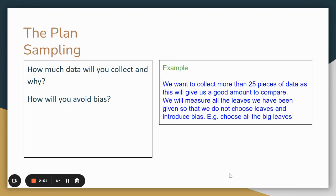We're going to measure all of the leaves that we've been given so that we do not choose leaves and introduce bias. If we're allowed to choose we might choose to just measure all the big ones and it may be different for the little ones than the big ones. So we need to make sure we do them all.